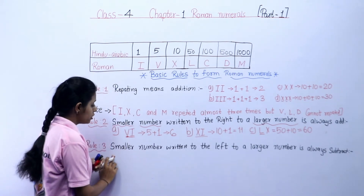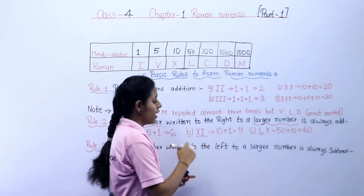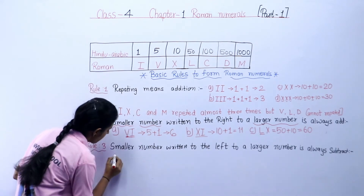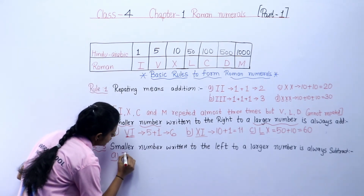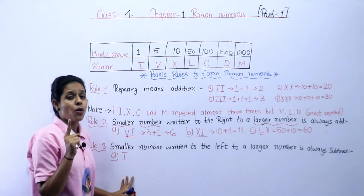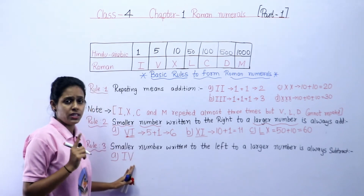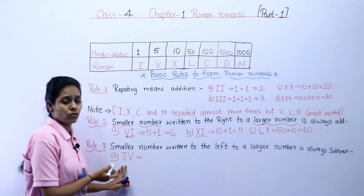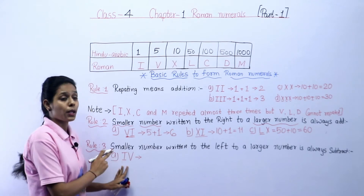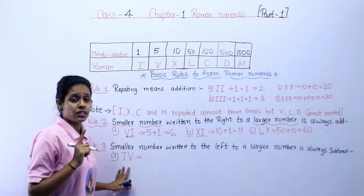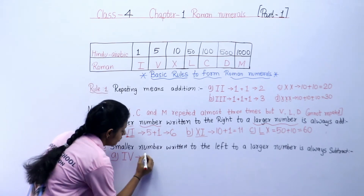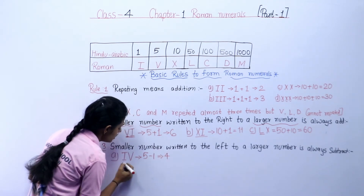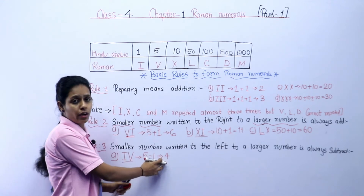Rule number three: a smaller number written to the left of a larger number is always subtracted. For example, IV — I means 1 and V means 5. Here, 1 is on the left side of the bigger number. So we subtract from the bigger number: 5 minus 1 is equal to 4. This symbol is used to write number 4.